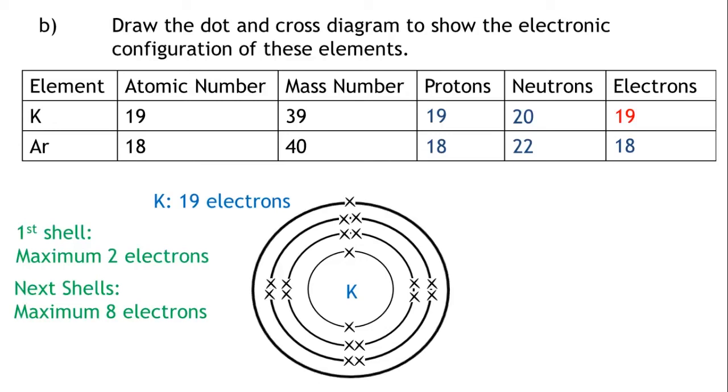Argon has 18 electrons: 2 in the first shell, 8 in the second shell, and 8 in the third shell.